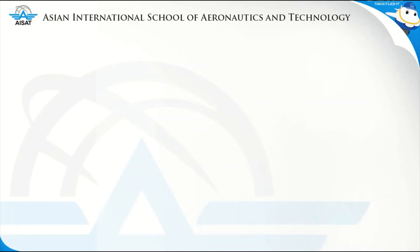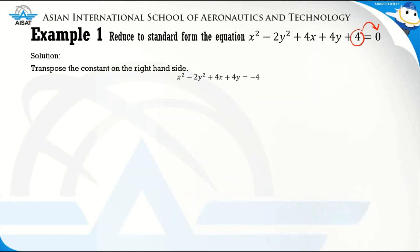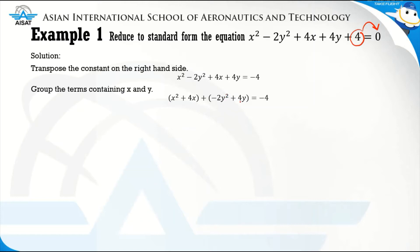Let us have our first example: reduce to standard form the equation x² minus 2y² plus 4x plus 4y plus 4 equals 0. The first step is to transpose the constant to the right-hand side, giving x² minus 2y² plus 4x plus 4y equals negative 4. The next step is to group the terms containing x and y: (x² plus 4x) plus (negative 2y² plus 4y) equals negative 4.